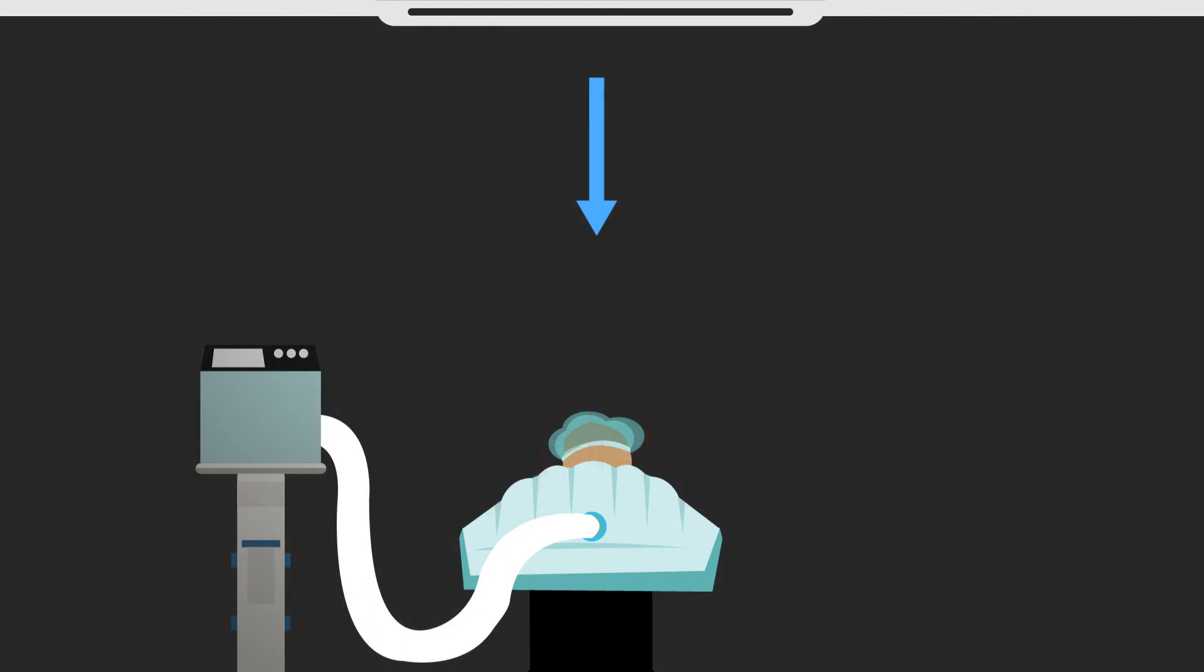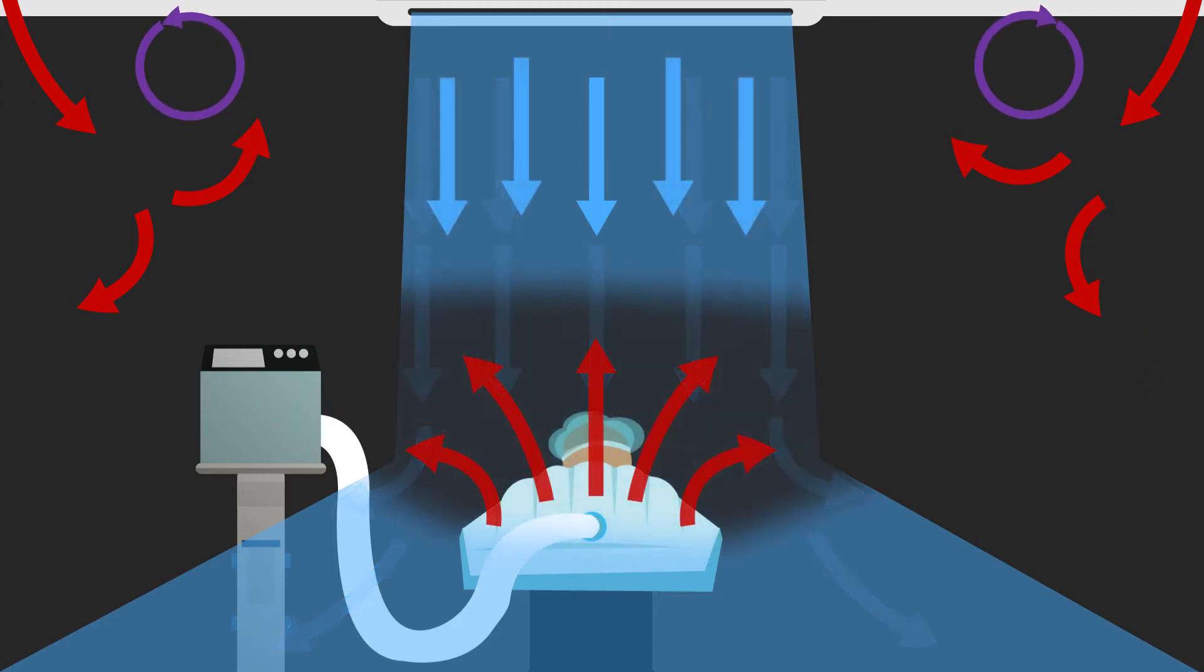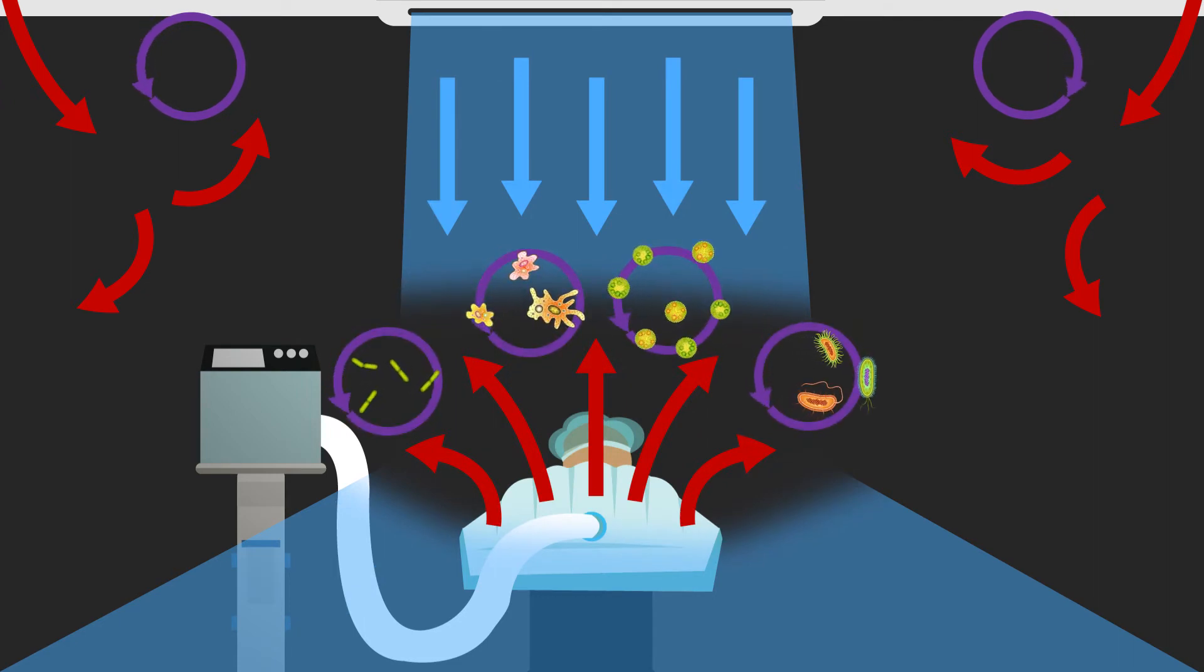Sophisticated laminar airflow systems are used to keep ultra-clean air moving through the operating room and prevent outside air from getting in. This constant current reduces the presence of airborne germs, thereby reducing the risk of infection. Disrupting this flow potentially allows stagnant air to accumulate around a patient, upping their infection risk.